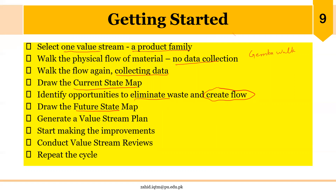We then generate a value stream plan for how to move from current state to future state, make improvements based on the future map, and conduct ongoing value stream reviews — repeating this cycle continuously. Lean is not a state but a culture, a system, a never-ending process. The current state is a baseline for drawing the future state, and once the future state is reached, it becomes the current state for the next future state.